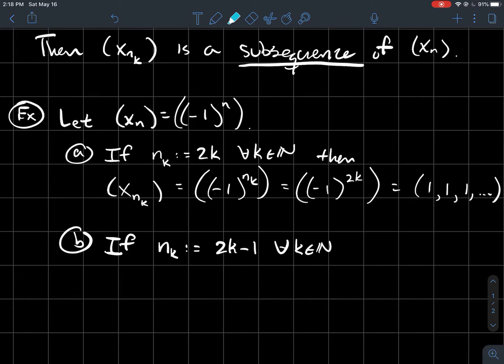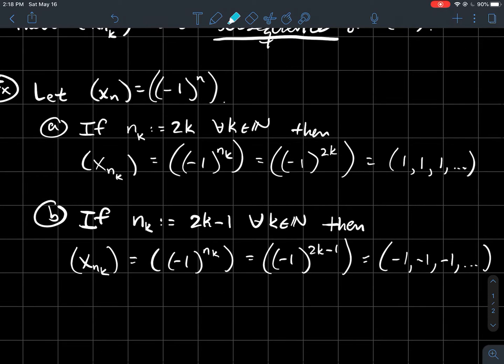Similarly, what if I let nk now be of the form 2k minus one for all natural numbers k? And so now I'm just telling you that I'm just picking off the odd exponents from this sequence here. So I'm making the subsequence whose exponents are just odd. And in that case, what would you get then?